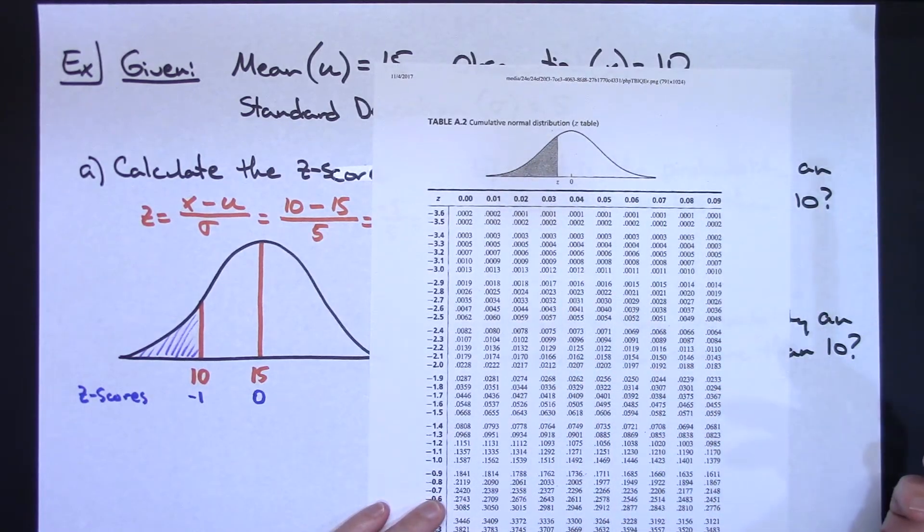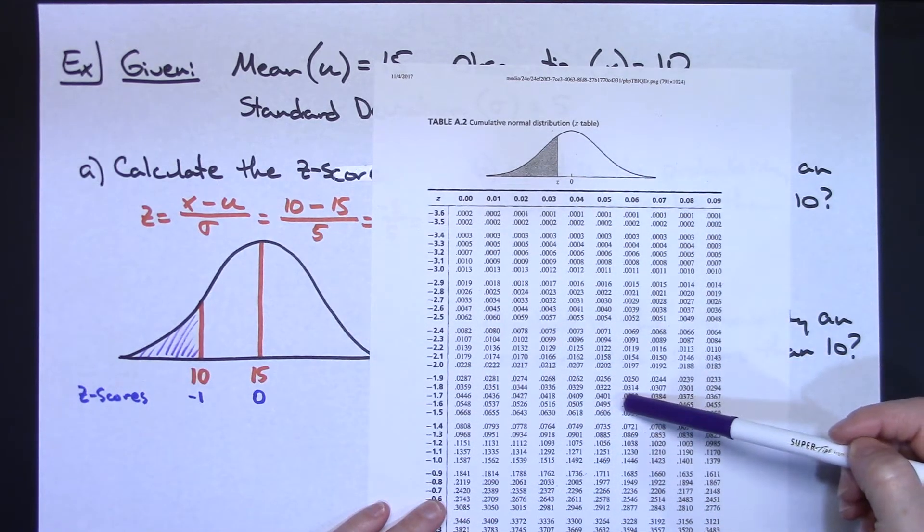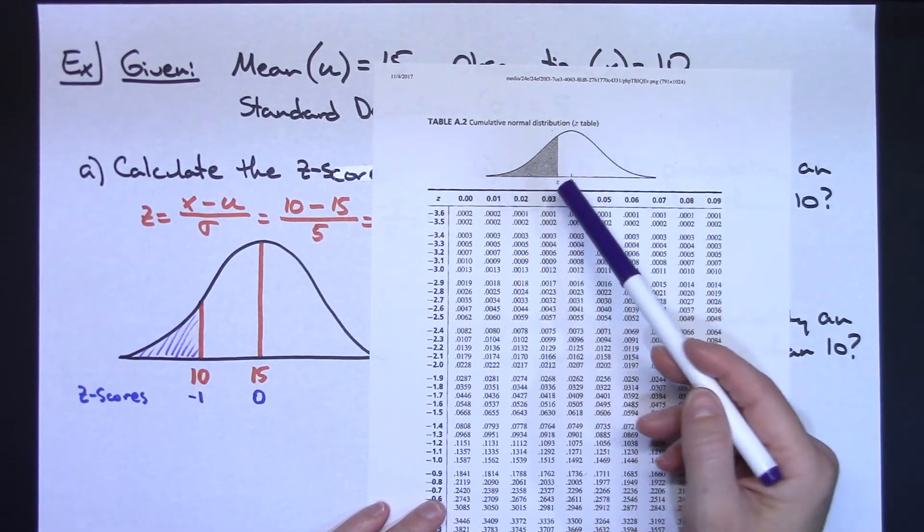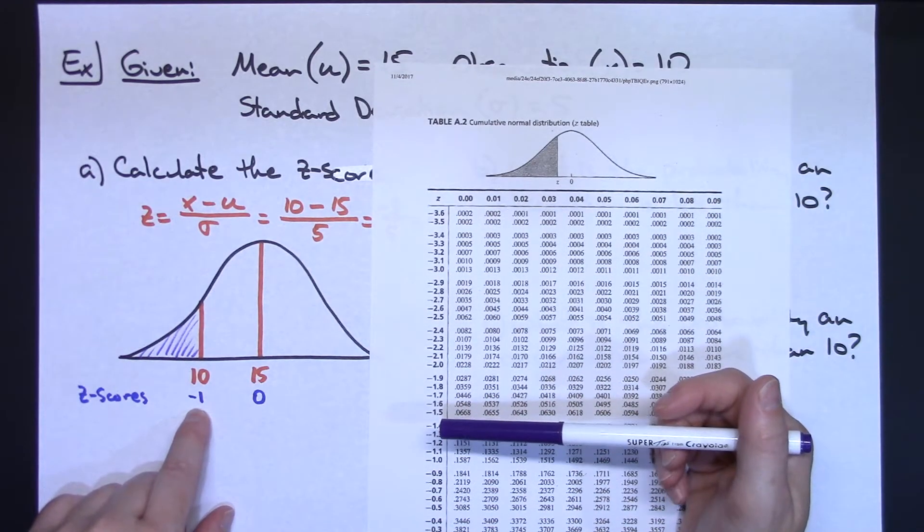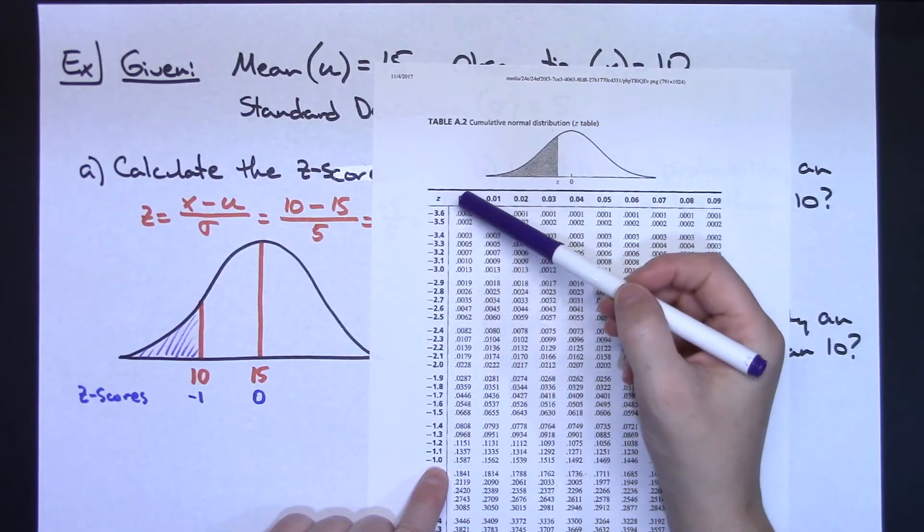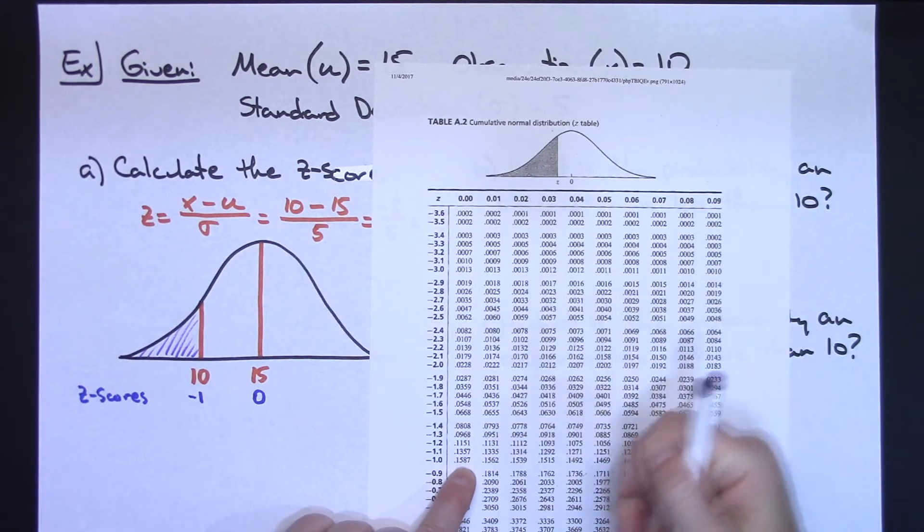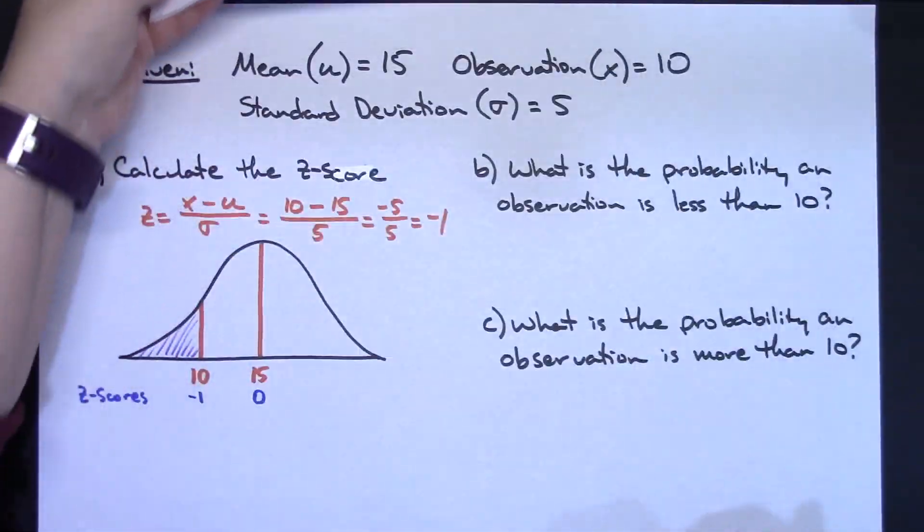Hopefully you can see this, but usually your normal distribution tables have some type of picture up here at the top that lets you know what these values in the table represent. This is showing shaded to the left, so this is going to give me the probability of it occurring to the left or less than your observation. I have a z-score of negative 1, which is negative 1.0000. So I'm going to come down my z-score until I get to a negative 1. I'm going to go across the top to correspond to the appropriate decimals, which is 0.00. And then I'm going to come down, and you've got a 0.1587. So that value is going to come from your table.